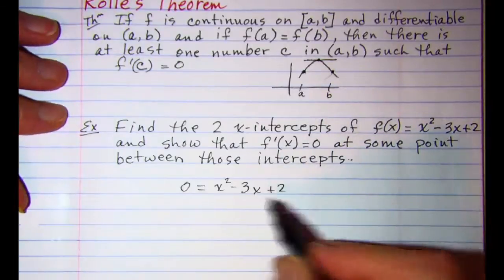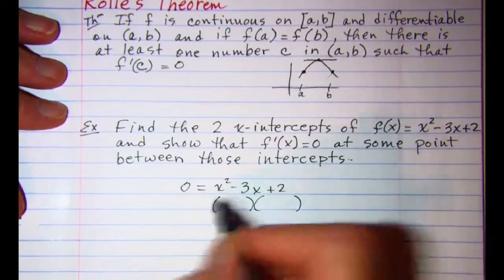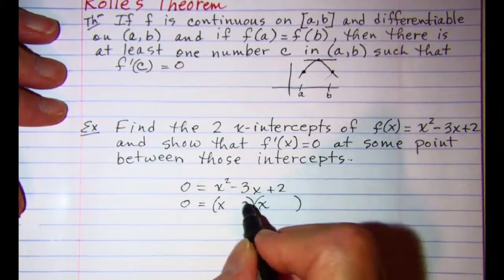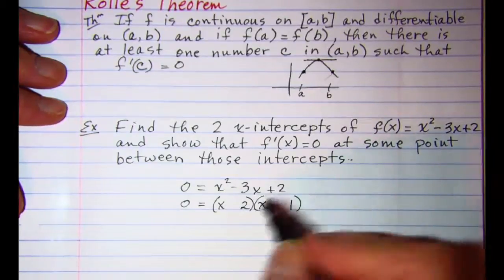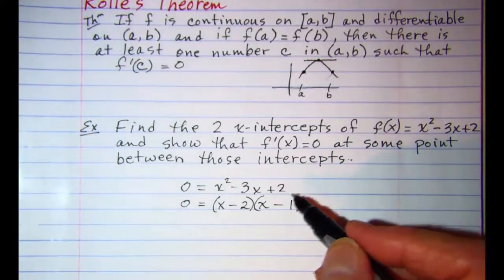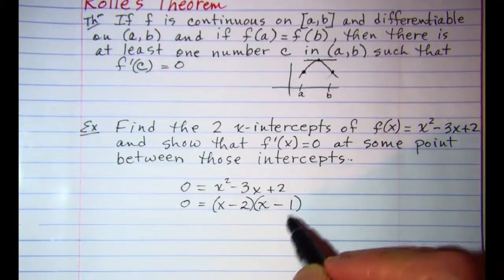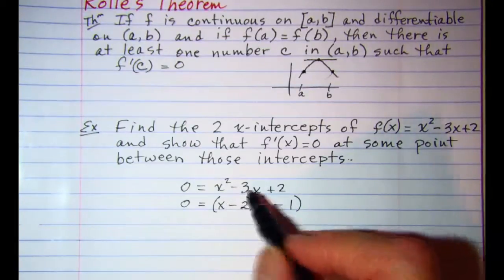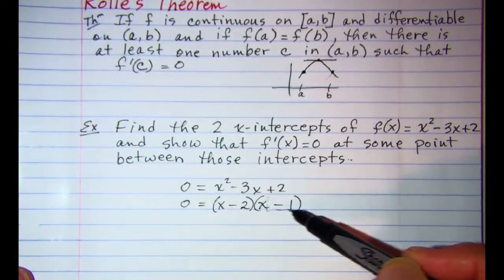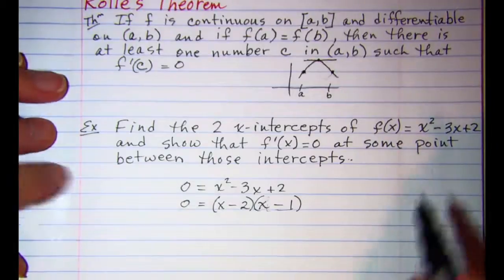So this trinomial factors nicely so we have x and x, 2 and 1. Both of these have to be negative in order to get a positive 2. And then check to make sure negative 2x and a negative 1x does add up to give me a negative 3x. Now remember if you can't get it factored quickly then use quadratic formula. That will work all the time.